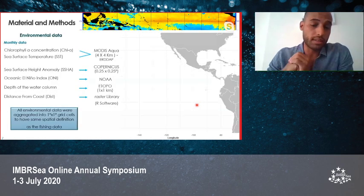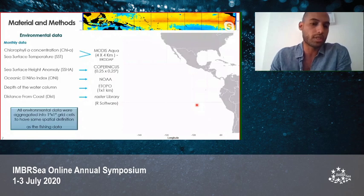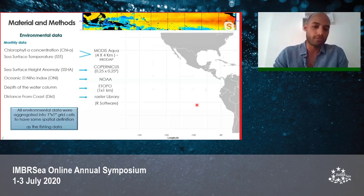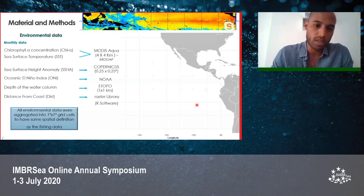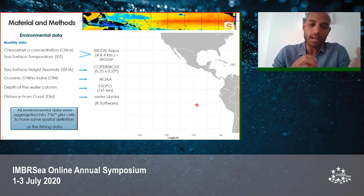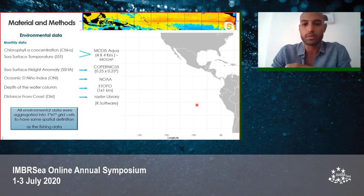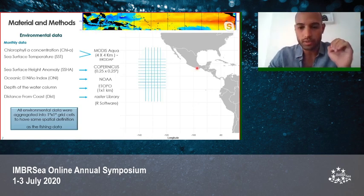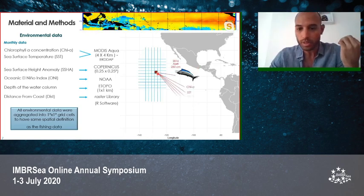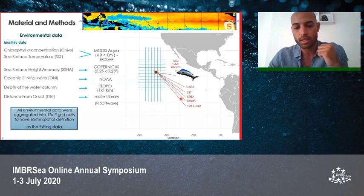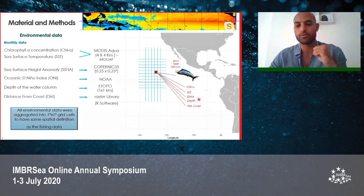We also collected environmental data from online remote sensing satellite sources, with monthly information for chlorophyll-a concentration, sea surface temperature, sea surface height anomaly, oceanic El Niño index, depth of the water column, and distance from coast. All environmental data were aggregated into one-by-one degree grid cells to match the spatial resolution of the fishing data, so that each fish record was paired with environmental values from the same location, year, and month.